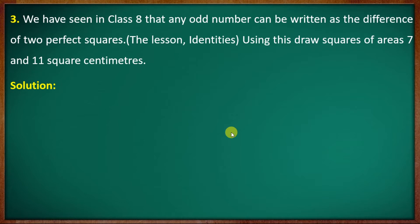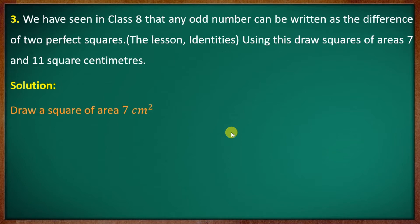The first question is: draw a square of area seven centimeters squared. Let me try to address this question. This is the correct question — draw a square of area seven.